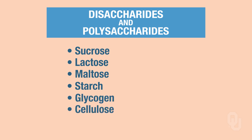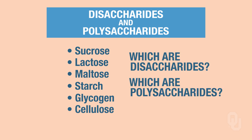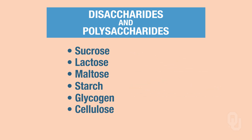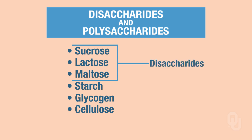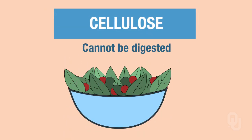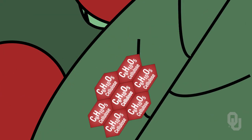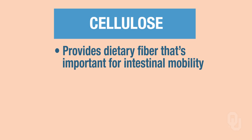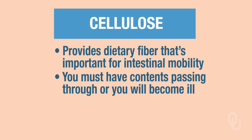Pause the video for a moment and determine which of these are disaccharides and which are polysaccharides. Sucrose, lactose, and maltose are all considered disaccharides, whereas starch, glycogen, and cellulose are all considered polysaccharides. Cellulose cannot be digested—so if you just ate a salad, the cellulose in the lettuce cannot be digested. But it's still important because it provides dietary fiber that's important for intestinal motility. You have to have contents passing through your intestines; otherwise you can get very ill and actually die if the contents of your gut don't pass through.